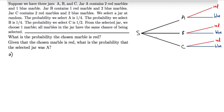Now let's find the individual probabilities. The probability of selecting jar A is one-fourth, jar B is one-fourth, and jar C is one-half. For jar A, which contains two red and one blue marble, the probability of choosing red given A is two out of three — two-thirds — and the probability of choosing blue is one-third.